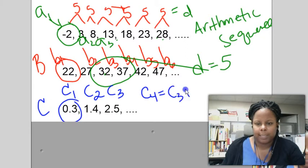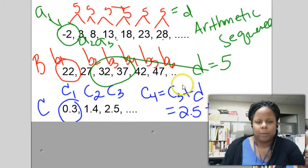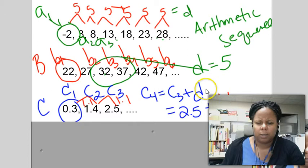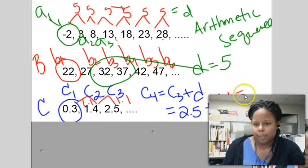Well, I know that my C3 is 2.5. But then my d, well, I haven't figured that out yet. If I take a look here, to go from 0.3 to 1.4 is 1.1. To go from 1.4 to 2.5 is 1.1. So that means my common difference is 1.1. And to figure out the next answer, I add these together. And I guess my next answer will be 3.6.